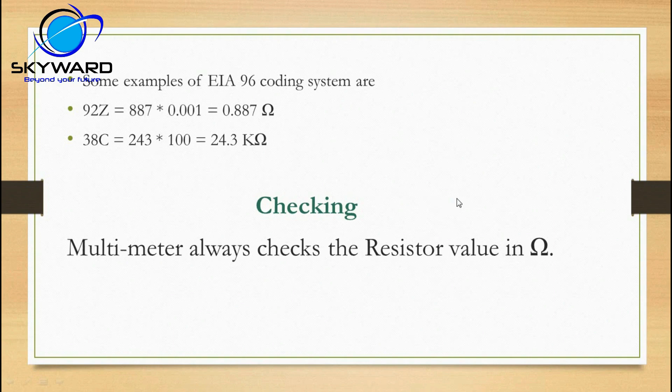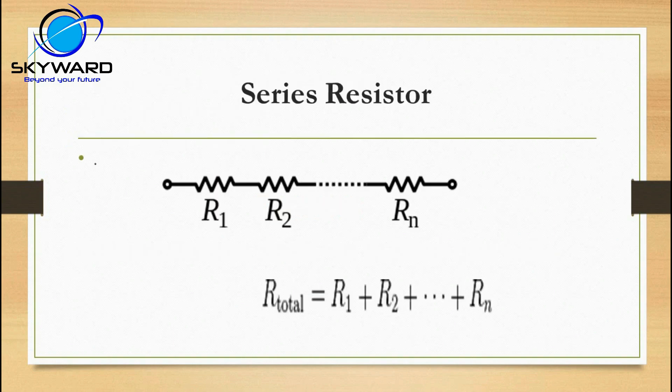To check a resistor using a multimeter, always measure in ohms. On the multimeter, go to the ohm division and check the resistor. We will practice this in the practical session. In series resistors, the resistance values are added: R-total equals R1 plus R2 and so on.